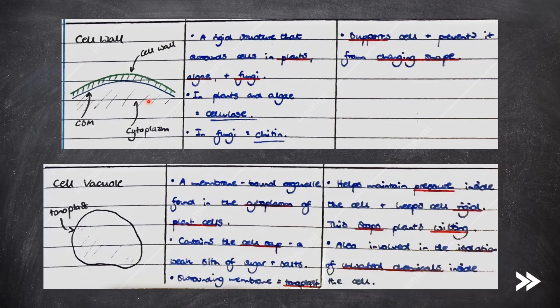And finally, the cell vacuole, also known as the permanent vacuole. This is a membrane-bound organelle found in the cytoplasm of plant cells. It contains the cell sap, which is a weak solution of sugar and salts. The surrounding membrane is called the tonoplast. The cell vacuole helps maintain the pressure inside the cell and keeps the cell rigid, which stops plants from wilting. The vacuole is also involved in the isolation of unwanted chemicals inside the cell.